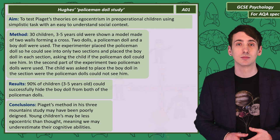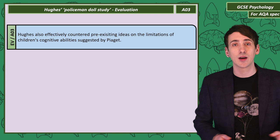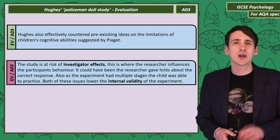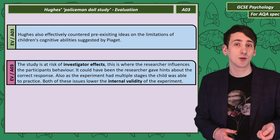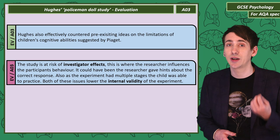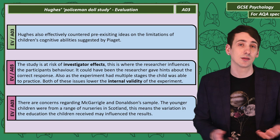When evaluating Hughes, we can say his study also successfully countered ideas developed by Piaget on the limitations of young children's cognitive abilities. However, we can be concerned with investigator effects in this study — it may be that the researcher unintentionally gave hints about the correct response. Also, the study had more than one stage, so it might have been that the child was being trained to answer correctly. Both of these issues could reduce the study's internal validity, as it may not have measured egocentrism but rather the effects of practice and the investigator.